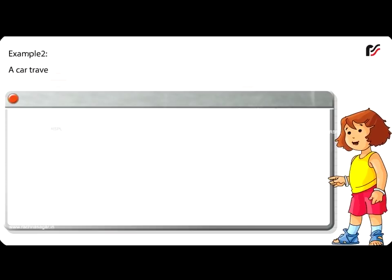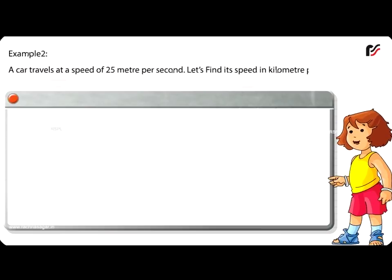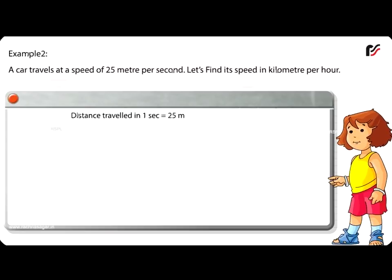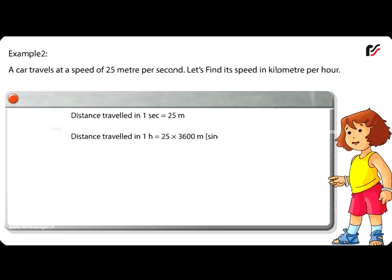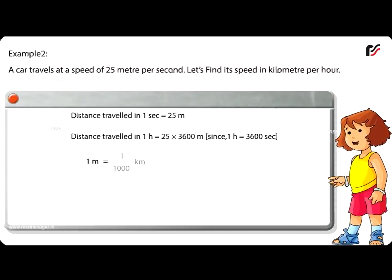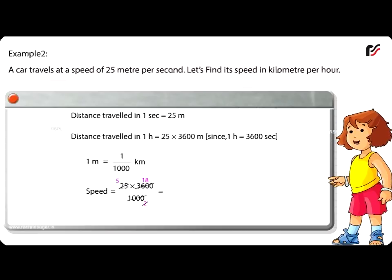Example 2: A car travels at a speed of 25 metres per second. Let's find its speed in kilometres per hour. Distance travelled in 1 second equals 25 metres. Distance travelled in 1 hour equals 25 multiplied by 3600 metres, since 1 hour equals 3600 seconds. Since 1 metre equals 1/1000 kilometre, speed equals 25 multiplied by 3600 divided by 1000, which equals 90 kilometres per hour.